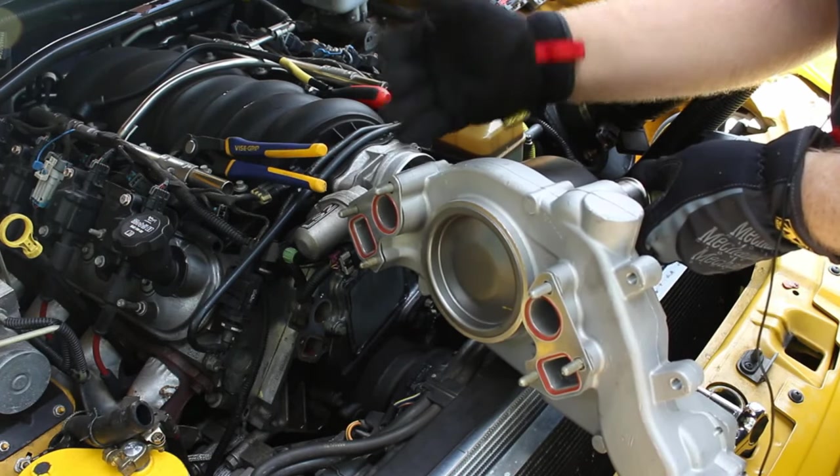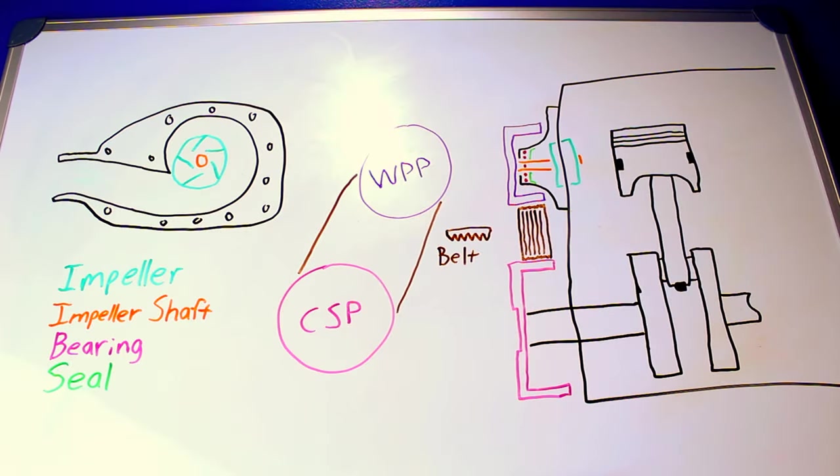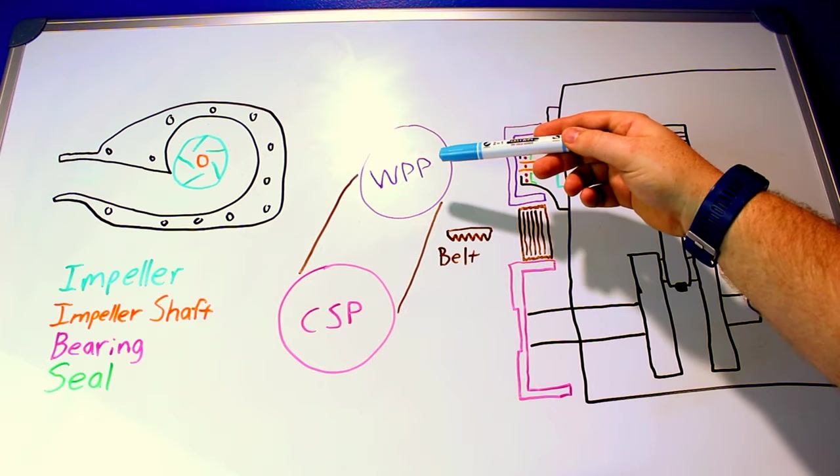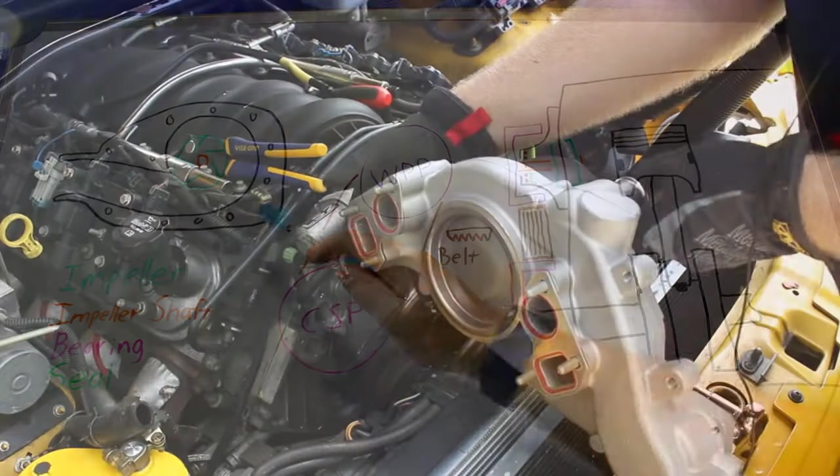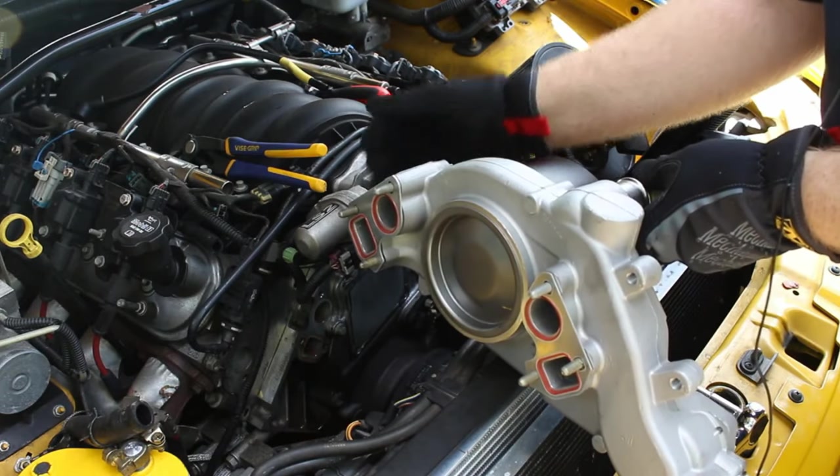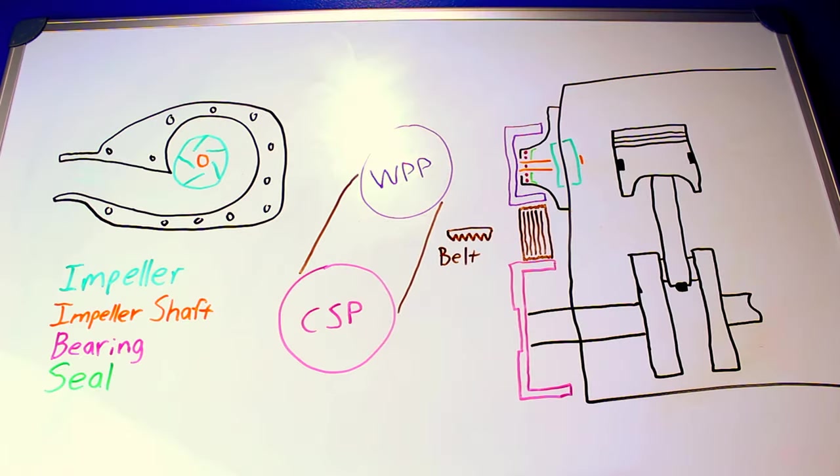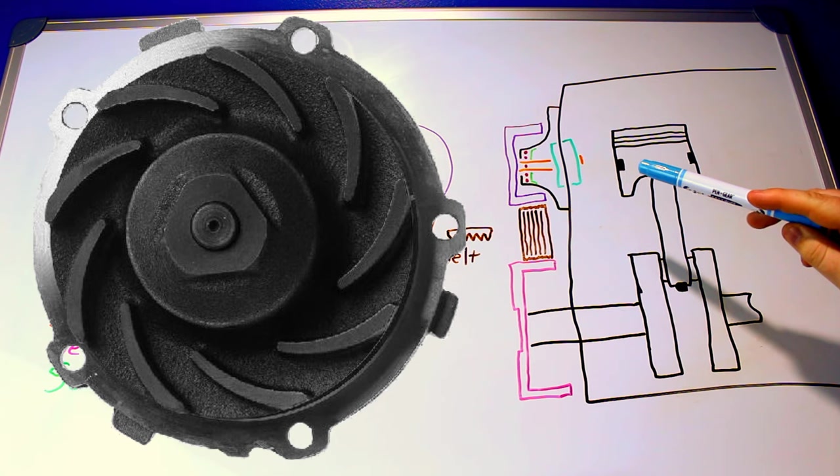Water pumps have been a vital part of almost every liquid cooled engine ever built. On some of them they're just a pulley sticking out of a chunk of metal on one side and look like this on the other side. On others you won't even see the inner workings here. Some of them are bolted to the outside of the engine like we have in this design here and others will be found behind the timing cover.